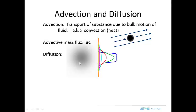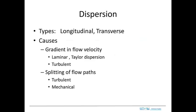There are two types of mechanical dispersion in particular. One causes mixing in the direction of flow — longitudinal dispersion — and one causes mixing perpendicular to the flow — transverse dispersion. This transverse dispersion is what causes the plumes to spread out perpendicular to the flow direction.